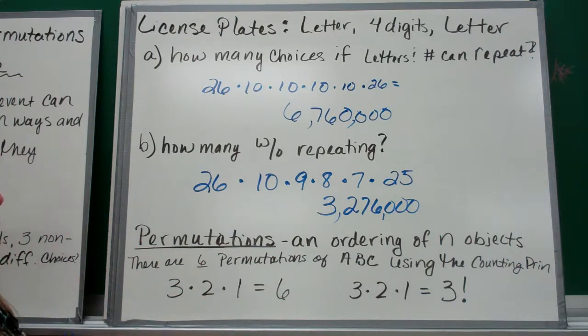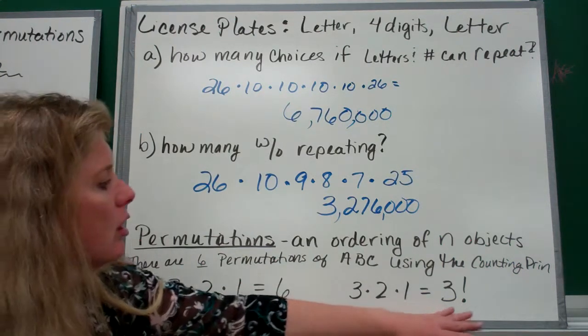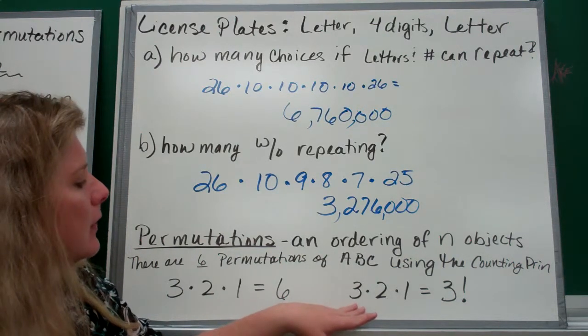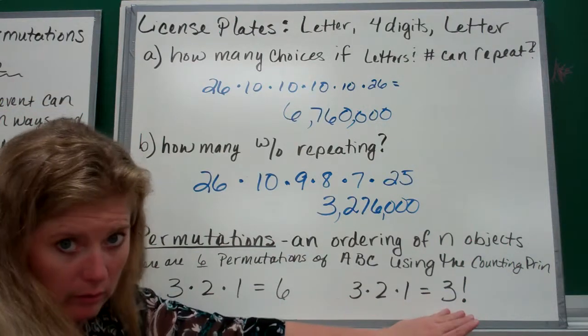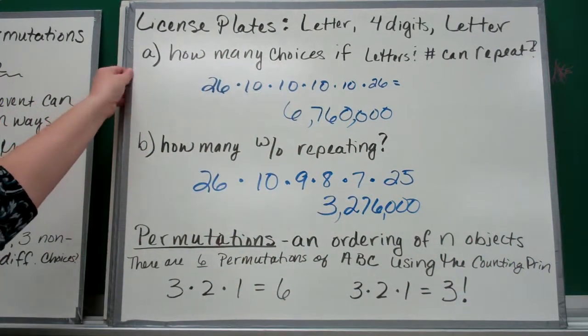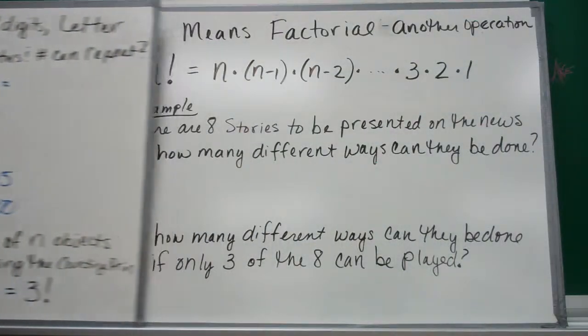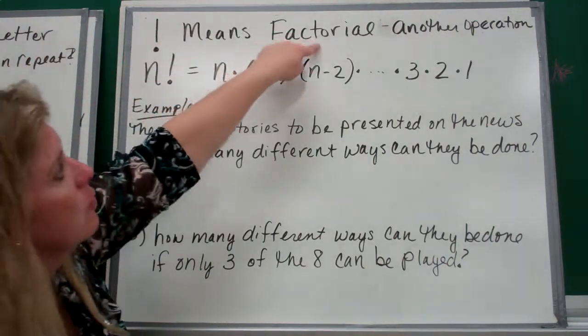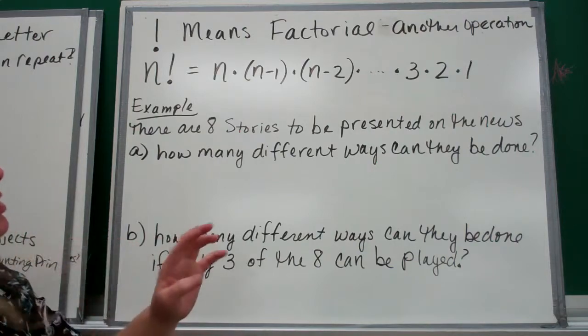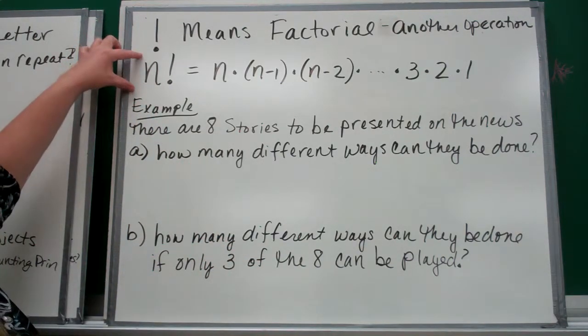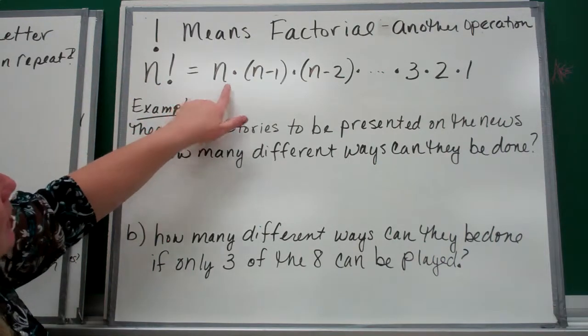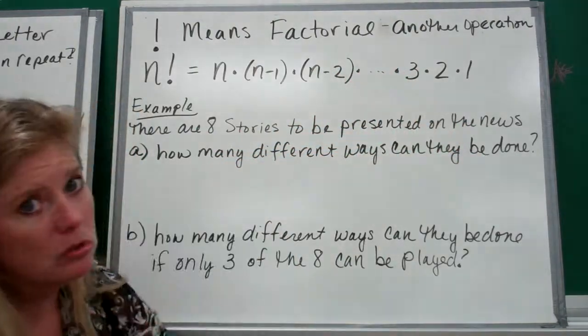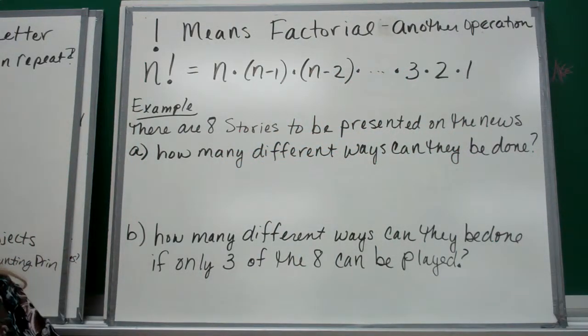Now I'm going to introduce you to another operation called factorial. When you write all the digits and you're multiplying them, this is called three factorial. The exclamation point is like another operation in math. It's kind of like another operation, but it's just an extension of multiplication. So n factorial is going to be n times (n-1) times (n-2) times blah blah blah all the way down to 3, 2, 1.